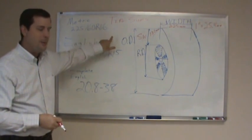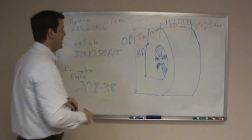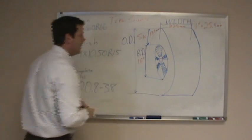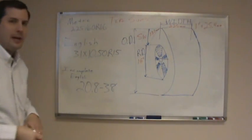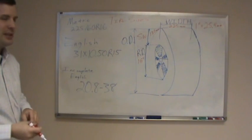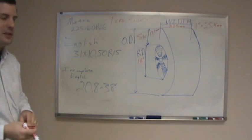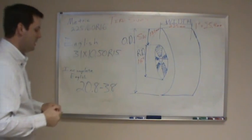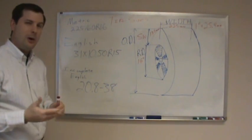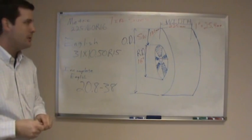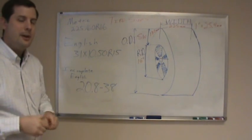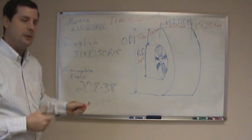The last number is the rim diameter, and this is in inches. So now we have a 225/60/16 — again, a very common size. Most cars, pickups, and SUVs are going to have metric tire sizing.